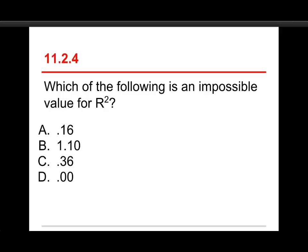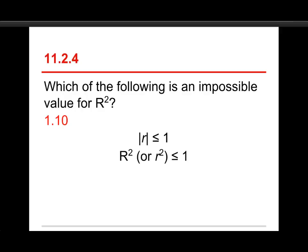Number four, which of the following is an impossible value for R²? The choices are 0.16, 1.10, 0.36, or 0.00. The answer is B, 1.10. And the reason is pretty simple. R² is simply the squared version of the correlation coefficient, and what I have right here is that the absolute value of r has to be less than or equal to one. There's no such thing as a correlation coefficient that goes to 1.10 or minus 3 or something like that. It has boundaries between negative one and positive one. And so when you square it, it actually all becomes positive, so now it just goes from zero to one. And so the R² is limited to that range, zero to one. And so an R² of 1.10 is just impossible.